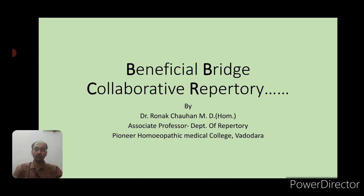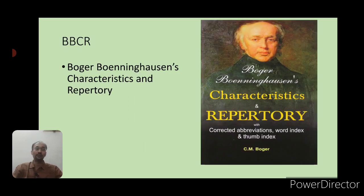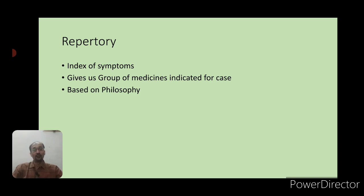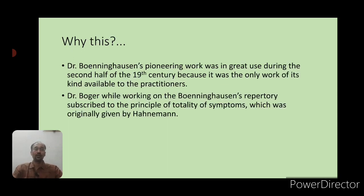Welcome to my YouTube channel Talks on Homeability. Today we are going to discuss a topic named the Beneficial Bridge Collaborative Repertory, which we all know in simple terms as BBCR — Boenninghausen's Characteristics and Repertory. We know that a repertory is an index of symptoms of materia medica, and it gives a group of medicines indicated for a case from which we find our similimum within a short period of time.